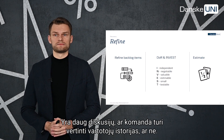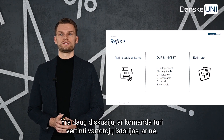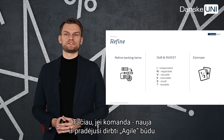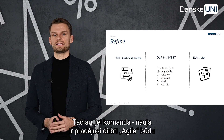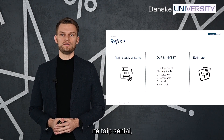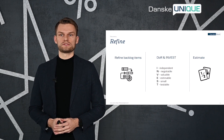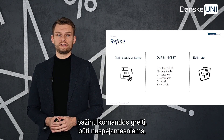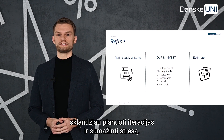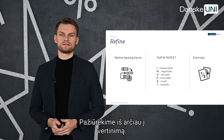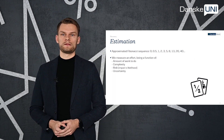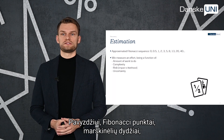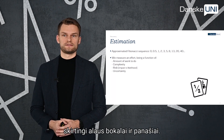There are many debates about whether teams should estimate user stories or not, and there are pros and cons both ways. But if the team is newly formed or has started working in the Agile way not so long ago, I always recommend estimating backlog items simply because it helps to plan better, to know the team's velocity, to be more predictable, to have smoother iteration planning, and even less stress. There are a number of ways to do it, such as Fibonacci story points, t-shirt sizes, different types of sizing, and many more.